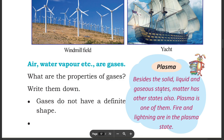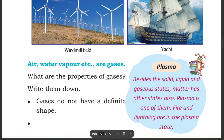Plasma. Besides the solid, liquid, and gas state, matter has other states also. Plasma is one of them. Fire and lightning are the plasma state of matter.